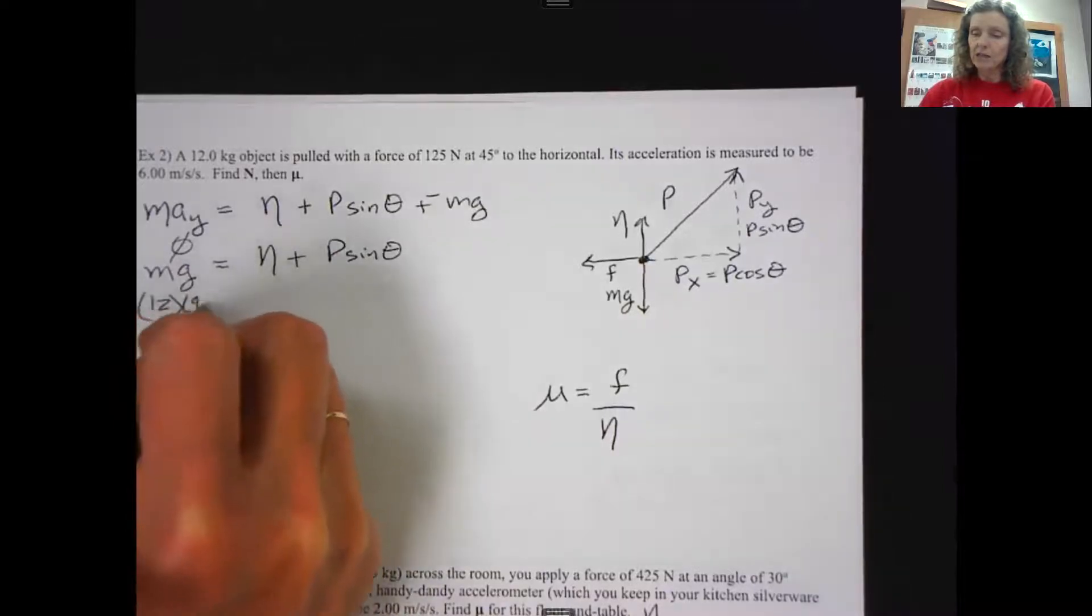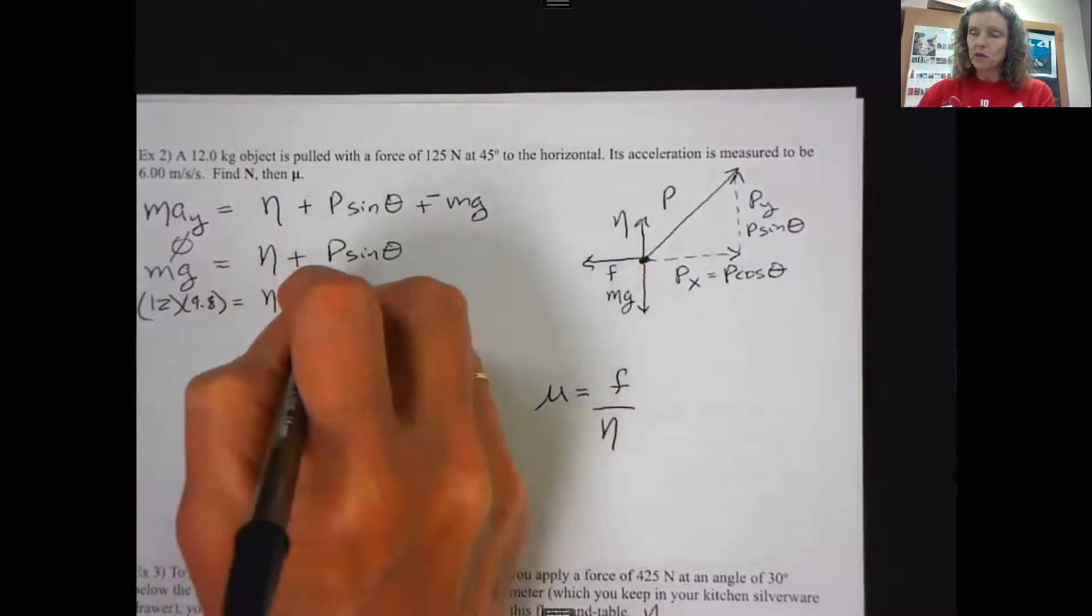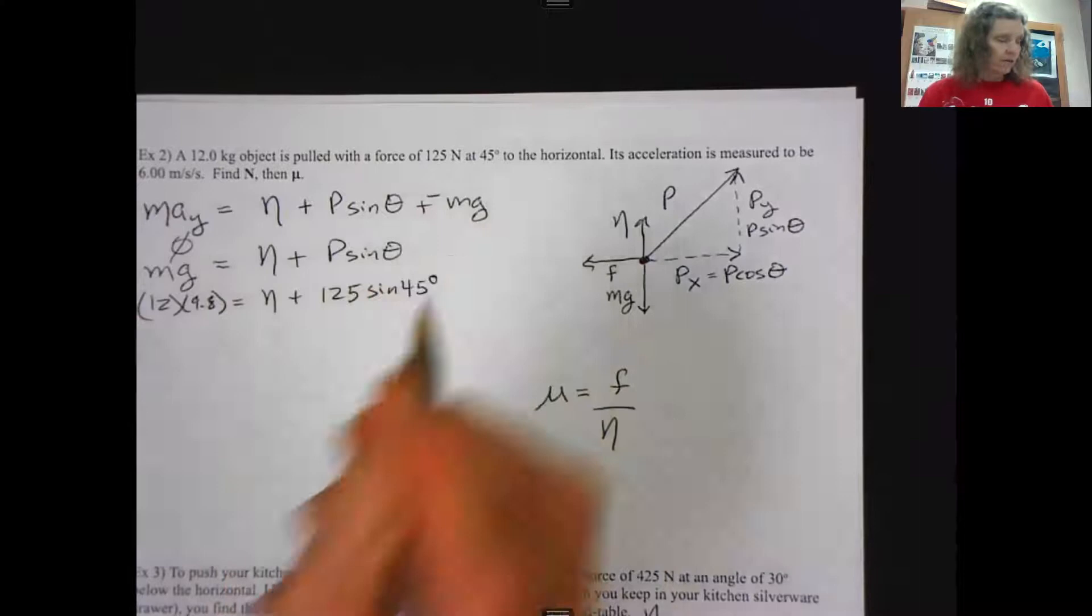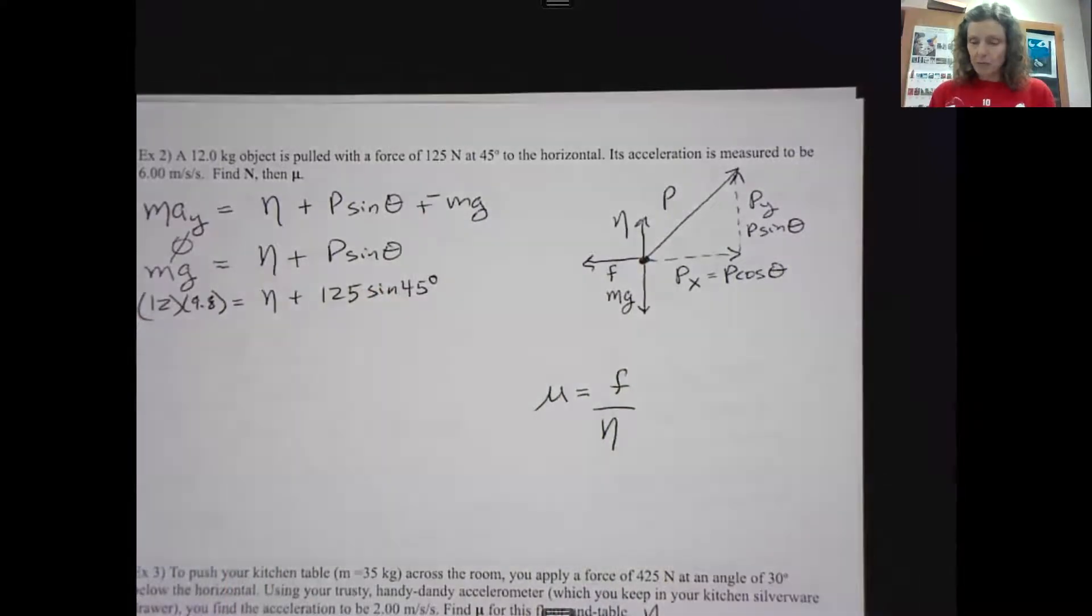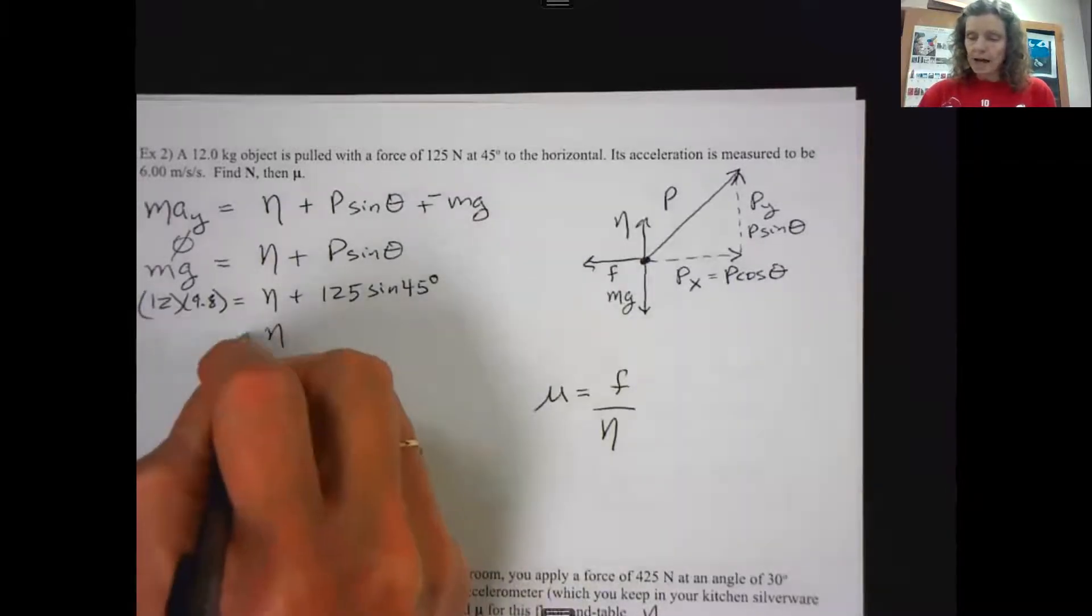So let's see what we can substitute in here. 12 times 9.8. The normal is unknown. The pull is 125. And the angle is 45 degrees. So I'm going to pick up my calculator, put those things in.